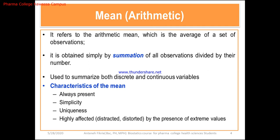Discrete variables have gaps between values — for example, number of children; you cannot say 1.1 or 1.2 children. Continuous variables, like height, have no gaps: 1.1, 1.2, 1.3, 1.4. The most peculiar feature of the mean is that it is always spread. Its calculation is very simple and it is unique — for one dataset there is one mean value.